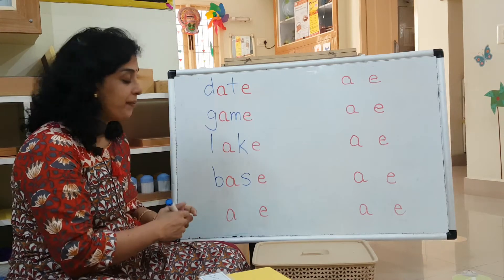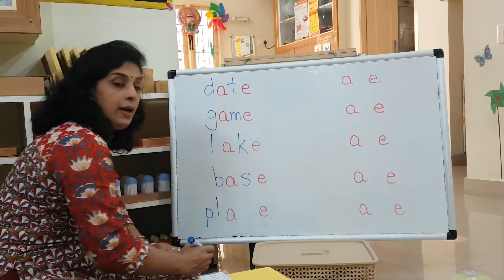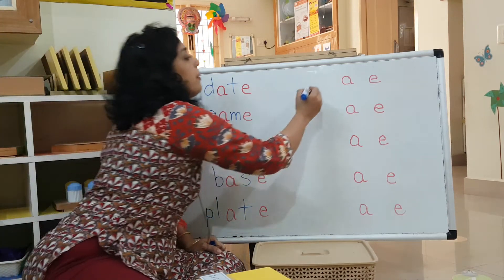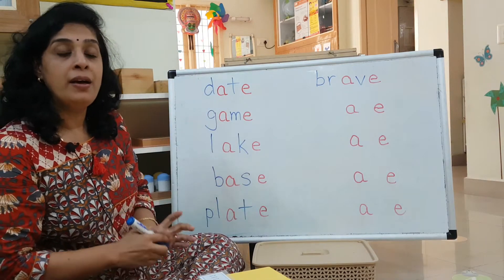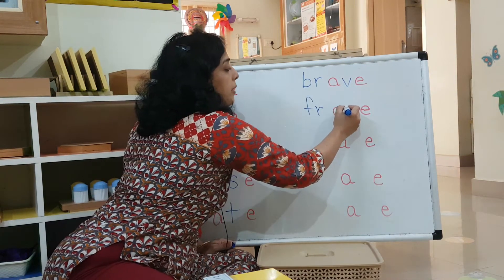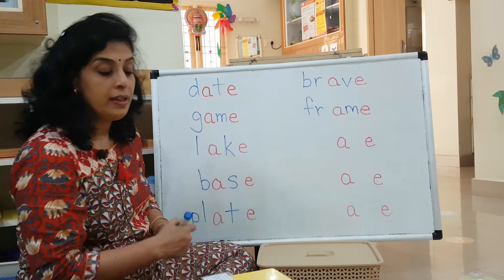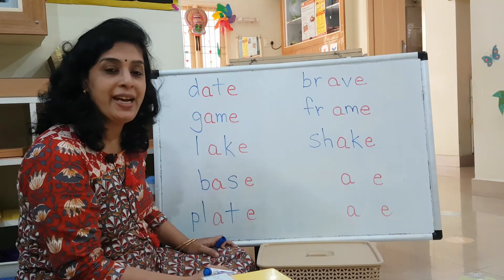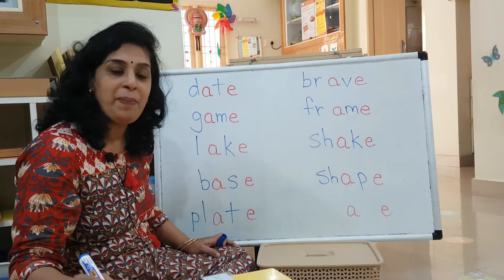Now let's go for some bigger words with familiar sounds. PL-A-TE — 'plate'. Very good. Next: BR-A-VE — 'brave'. Then: FR-A-ME — 'frame', like a photo frame. Then: SH-A-KE — 'shake'. Or SH-A-PE — 'shape'. You get it? Is it getting easier for you?